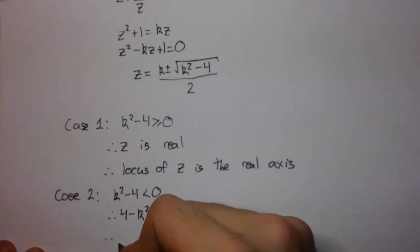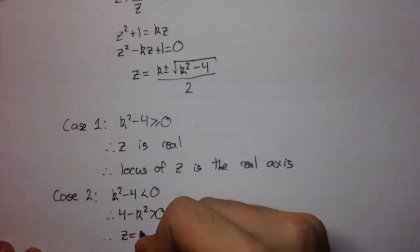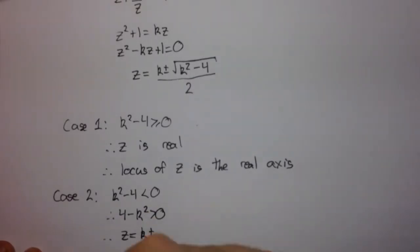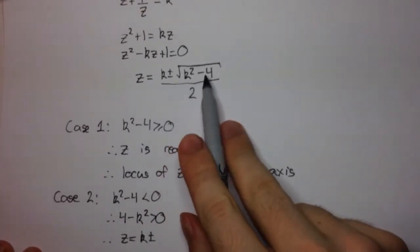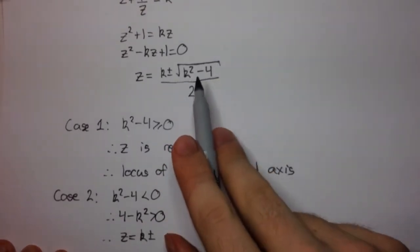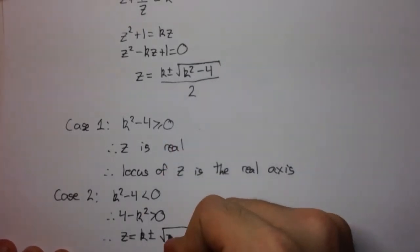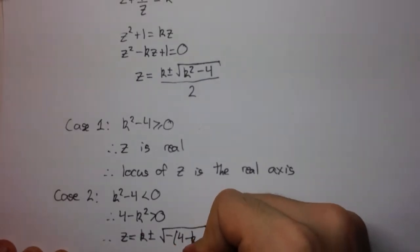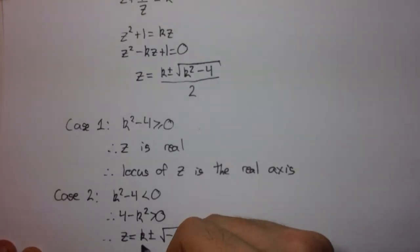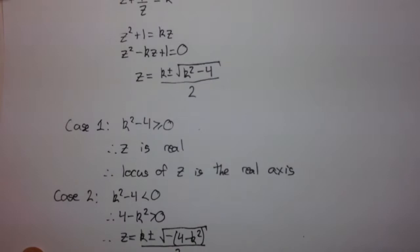And so, therefore, z equals k plus or minus, now here we have k squared minus 4. Now, I'm going to factor out a minus 1 from this, and you'll see why in a moment. So, minus 4 minus k squared, all over 2.